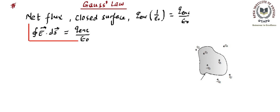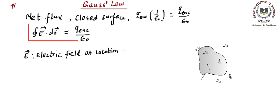Now here are the terms involved. On the left hand side we have the total flux, and on the right hand side simply Q enclosed upon epsilon naught. The integration is over the closed surface. E here indicates the electric field vector at the location of the dS vector — at the point where the surface element dS has been chosen, E is the field at that point.